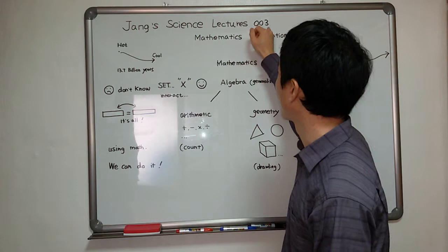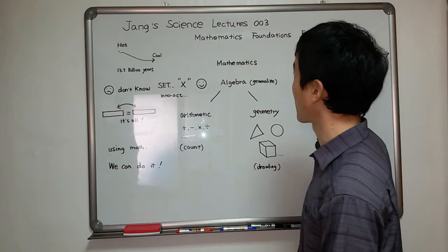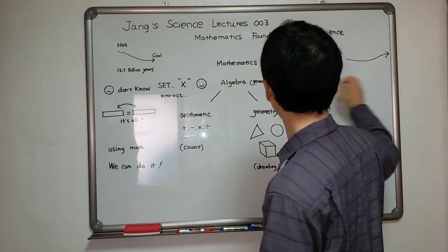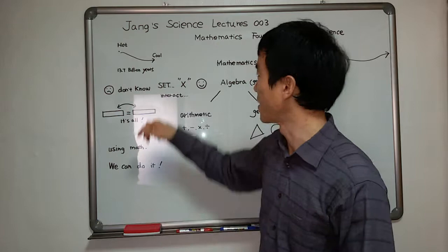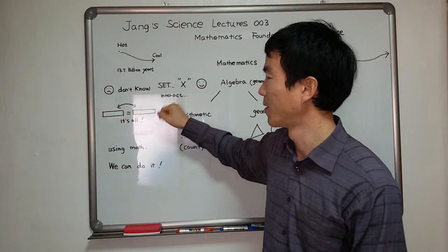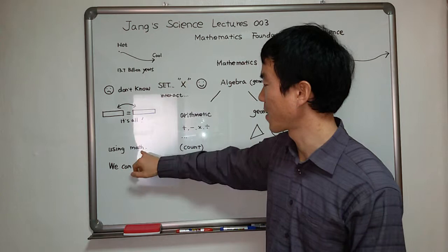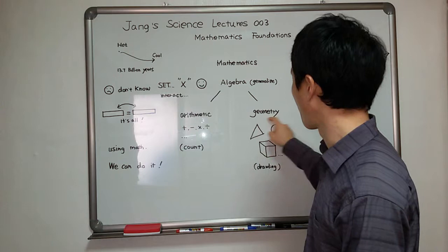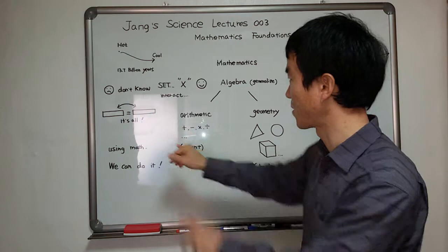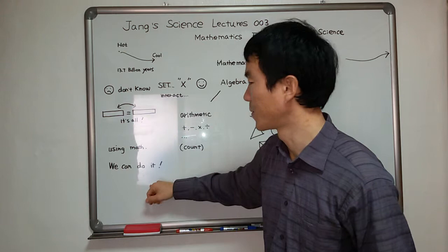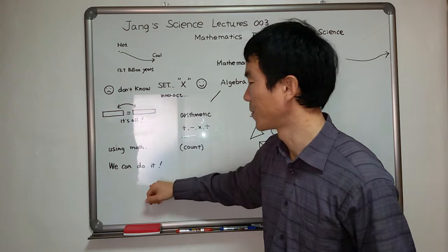Summarized Chang's Science Lecture 003, subject Mathematics Foundations for Science. From Big Bang to next, I don't know, I'm tired, I'm complex. You can only set up x, set x, next. It's all interconnects. Using math: arithmetic counting, geometric drawing, generalized arithmetic. You can solve all problems. This method always works.